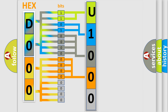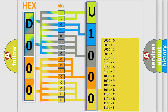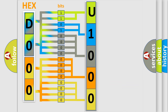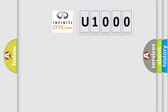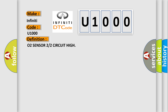A single byte conceals 256 possible combinations. We now know in what way the diagnostic tool translates the received information into a more comprehensible format. The number itself does not make sense if we cannot assign information about what it actually expresses. So, what does the diagnostic trouble code U1000 interpret specifically for car manufacturers? The basic definition is O2 sensor 2/2 circuit high.